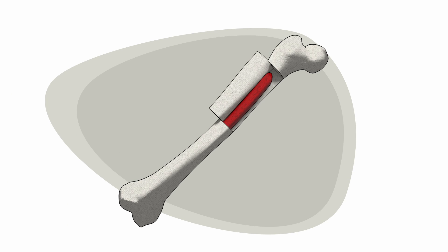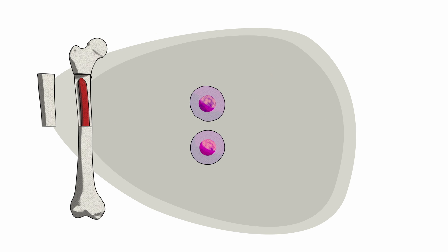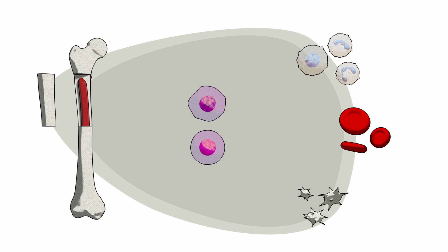Bone marrow is the soft inner part of the bone where stem and three main types of blood cells are formed: white blood cells, red blood cells, and platelets.